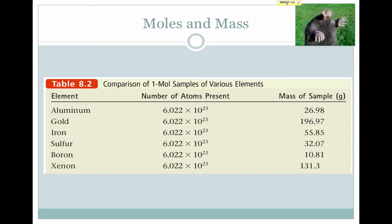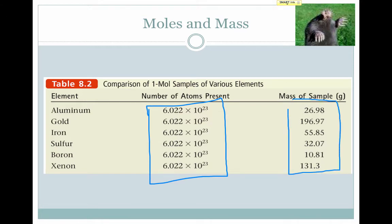To summarize, here's a whole bunch of different elements. In each case, the number of atoms present in one mole is always the same, because a mole is always 6.02 times 10 to the 23rd. But the mass changes, because the individual atoms in the sample have different masses. For instance, each gold atom has a much greater mass than each boron atom, resulting in a much larger mass for the overall mole.